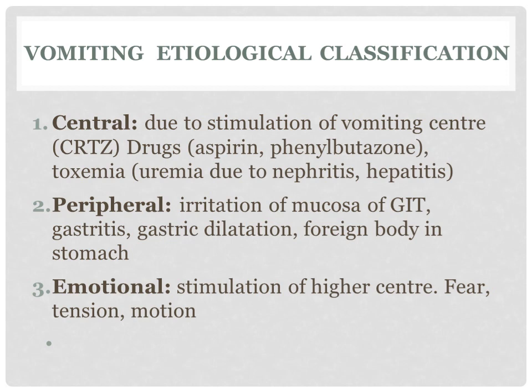After definition, we are moving to etiology. Etiological classification divides vomiting into three groups: central etiology, peripheral etiology, and emotional etiology. Central etiology is due to stimulation of the vomiting center — the chemoreceptor trigger zone, or CRTZ. Certain drugs, for example aspirin and phenylbutazone, and certain toxemic conditions such as uremia due to nephritis and hepatitis, stimulate the vomiting center and there is vomiting.